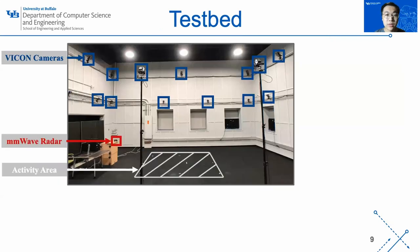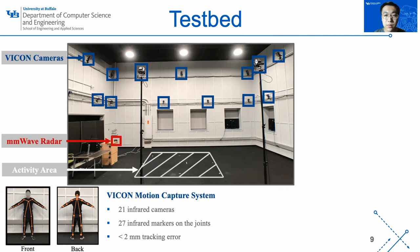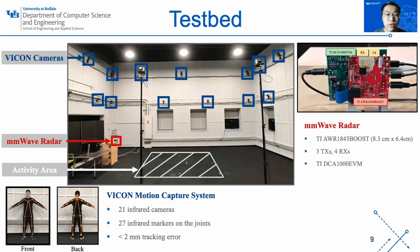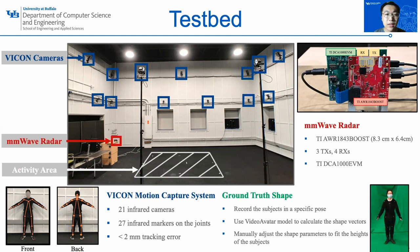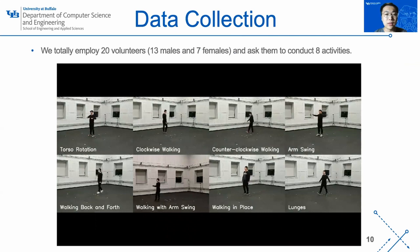Next, I will introduce our experiments. As shown in the image, this is our experimental scenario. In the data collection, we use the Vicon motion capture system to collect the ground truth pose of the subject. We use the commercial TI AWR 1843 boost as our mmWave radar, and use the video avatar model to generate the ground truth shape of the subject. For data collection, we totally employ 20 volunteers and ask them to conduct 8 activities as shown in the video.